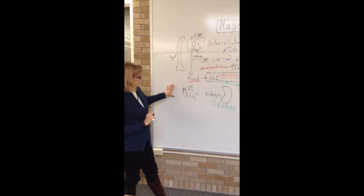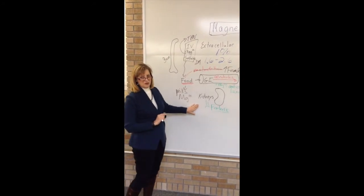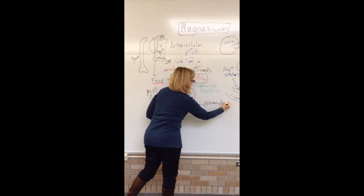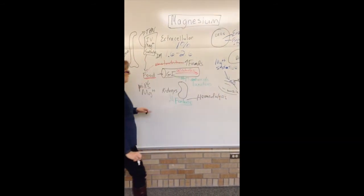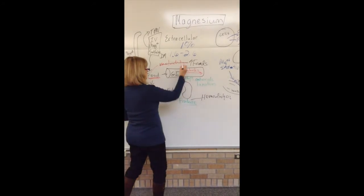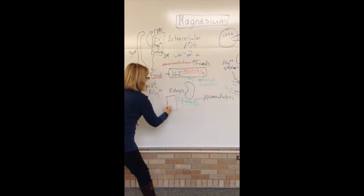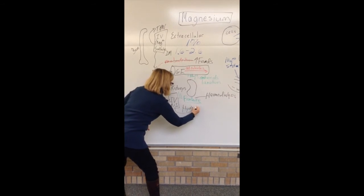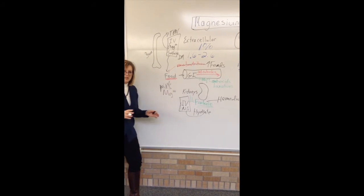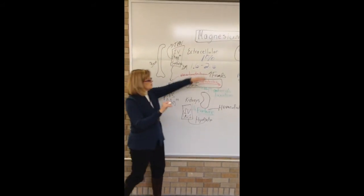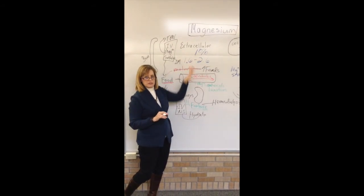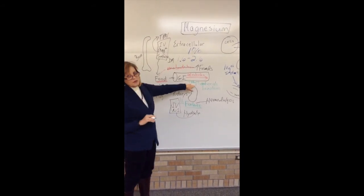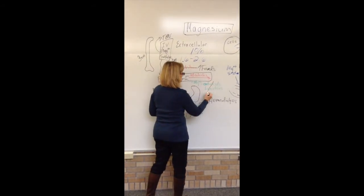What do we do when we have high magnesium? If there's kidney failure severe enough, we need to make sure the patient gets hemodialysis. If they do have some kidney function, another approach is to give an IV of something like normal saline — hydrating the patient creates a dilution effect that decreases the concentration. We also want to stop any medications such as antacids or laxatives that contain magnesium.